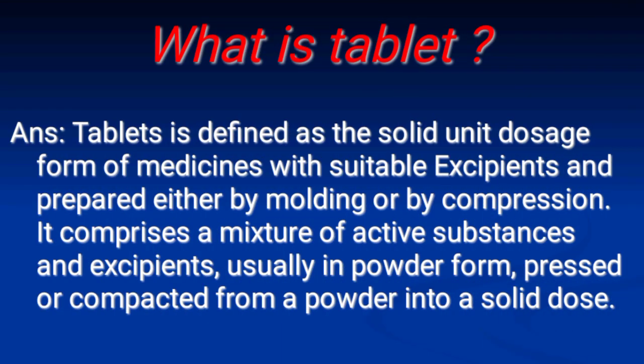Next: What is a tablet? Answer: A tablet is defined as a solid unit dose form of medicine with suitable excipients, prepared either by molding or by compression. It comprises a mixture of active substances and excipients, usually in powder form, pressed or compacted from a powder into a solid dose.